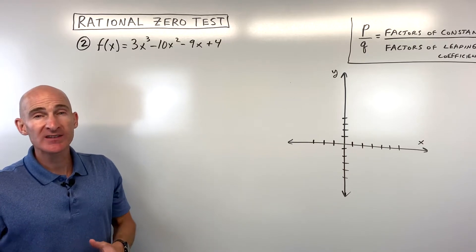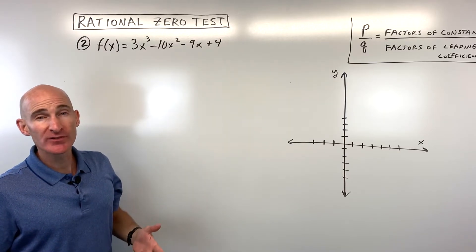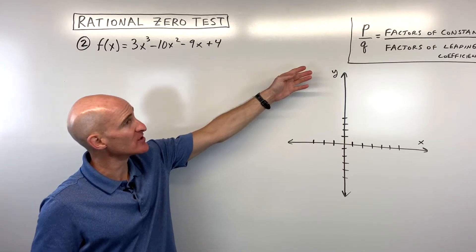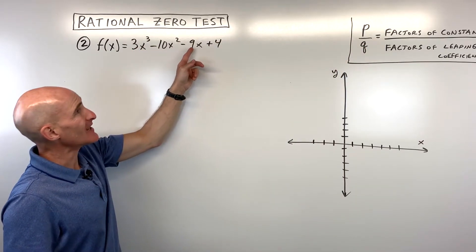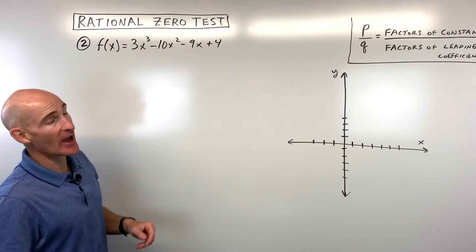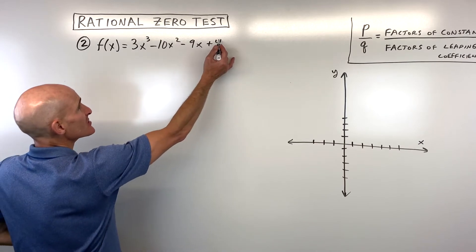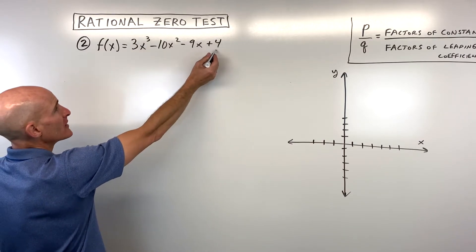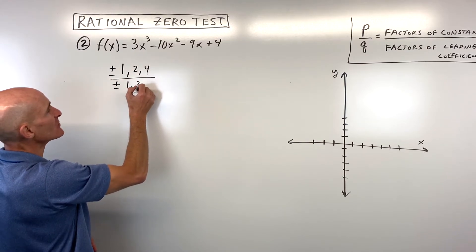Let's take a look at another example. We've got 3x cubed minus 10x squared minus 9x plus 4. We want to find the possible zeros and test which ones are actually zeros of this polynomial. To apply the rational zero test — also called the rational root theorem, or p over q — we want to make sure the coefficients are integers: positive or negative whole round numbers, no fractions, radicals, or imaginary numbers. We take all the factors of the constant divided by all the factors of the leading coefficient. Factors of 4 are 1, 2, and 4; factors of 3 are 1 and 3.